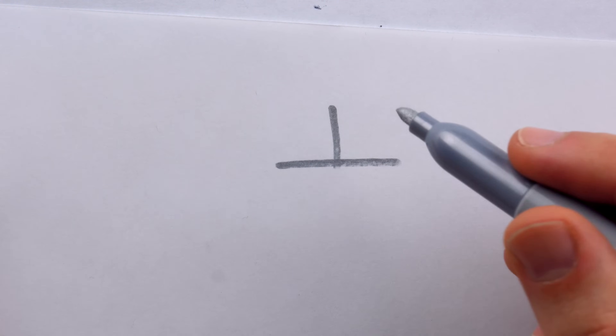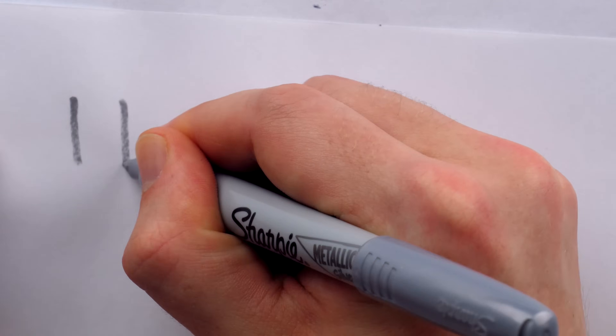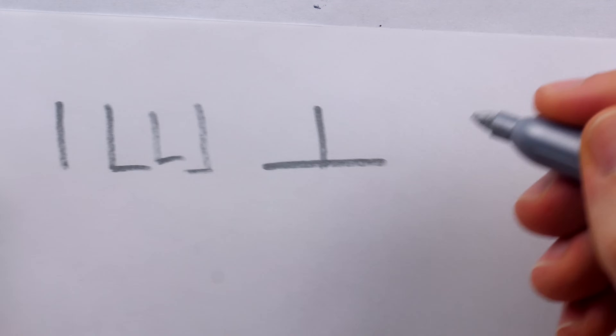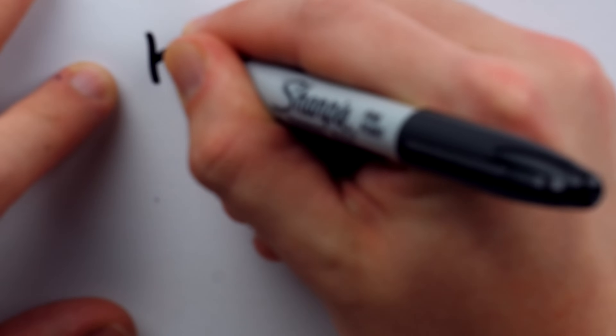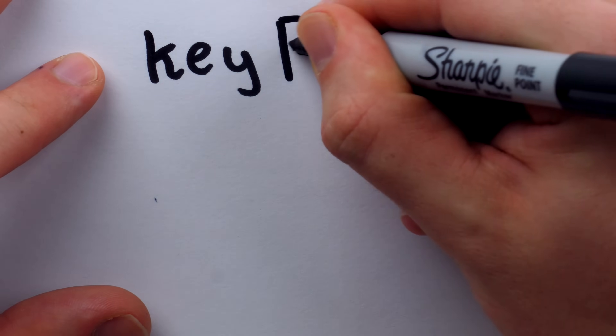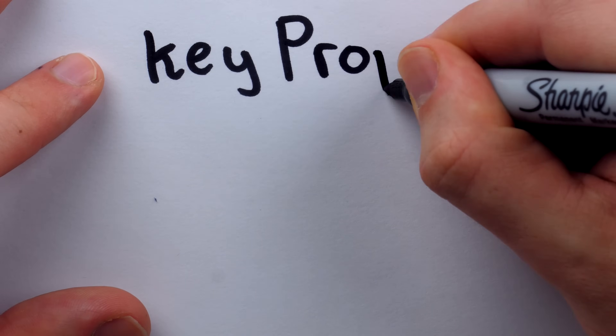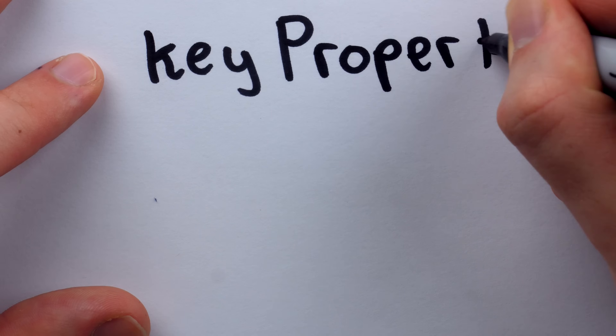Rather than the traditional plus sign, Israeli textbooks use what looks like an inverted T to avoid writing a symbol that looks like the Christian cross. One can certainly imagine some confusion using this symbol in conjunction with more sophisticated algebraic notation.